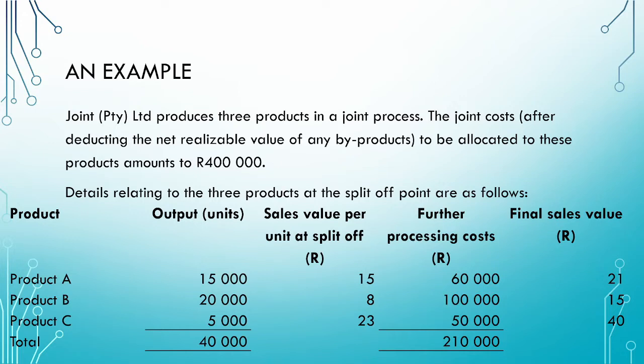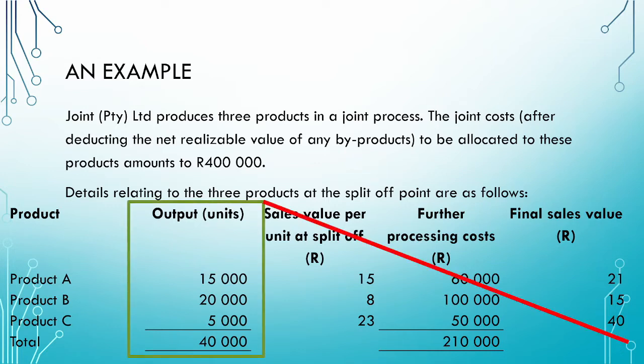We are then given details of the three products at the split-off point, when they become separately identifiable. We are given the output in units, the sales value per unit at the split-off point, any further processing costs, and then a final sales value after further processing has taken place. The key idea behind the physical measures method is that we allocate the joint costs based on the output only. Therefore, in this information, we are only concerned about the output and can ignore the rest of the details.